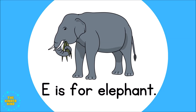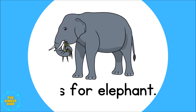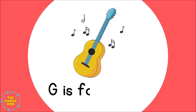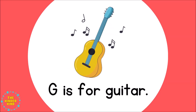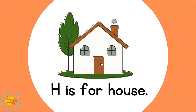E is for Elephant. F is for Finn. G is for Guitar. H is for House.